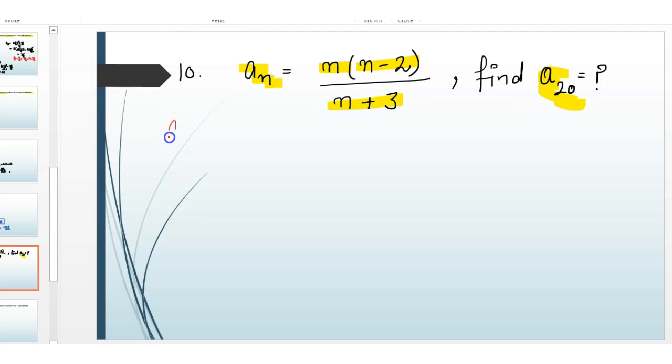So first of all we write here the nth term which is equals to n multiplied with n minus 2 divided by n plus 3.